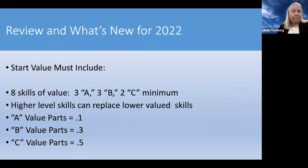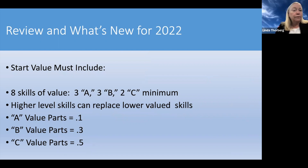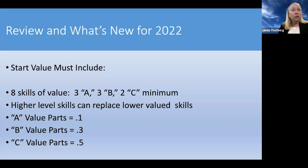Some of this is very basic, but we thought it was important to review so that if you have newer coaches, assistant coaches, or people who maybe were athletes but are now coaches, you're reminded of what needs to be in their routines. Your start value has to have eight skills of value in it: three A's, three B's, and two C's minimum. Of course, you can have higher-level skills and they can replace lower-valued skills. Make sure you can count up the value parts and be sure that none are missing.